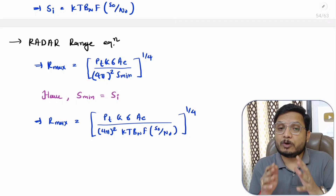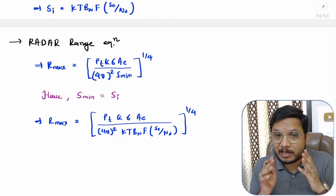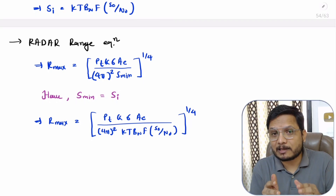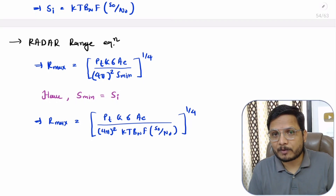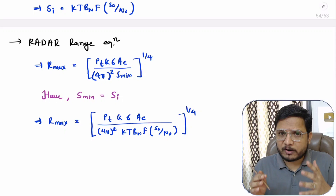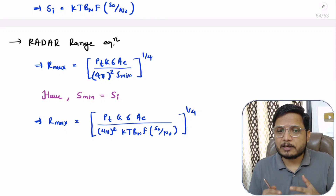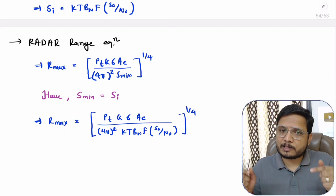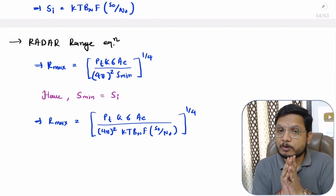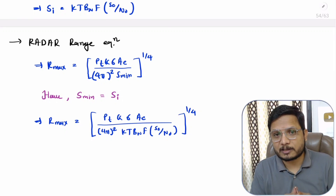One should know how to identify the minimum detectable signal based on receiver noise. I hope you have understood this. If there is anything you would like to share, please note it in the comment section — I will be happy to help you. Thank you so much for watching this video.